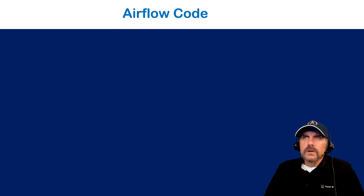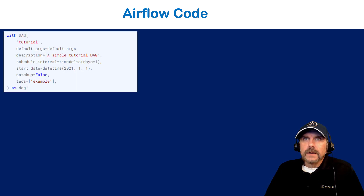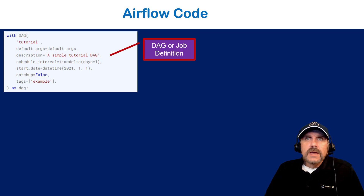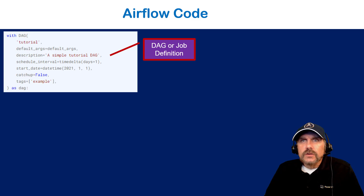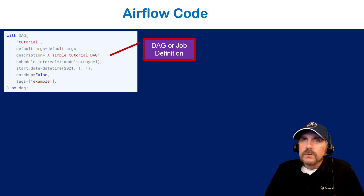Let's look at what Airflow code actually looks like when creating a job, known as a DAG. It starts with the DAG function using a context manager: 'with DAG'. It defines parameters like the name 'tutorial,' default arguments, a short description, a schedule interval — which is how you define how often it runs — a start date, a catchup parameter, and tags. That defines just a stub: we have a job, but we haven't defined any tasks yet.